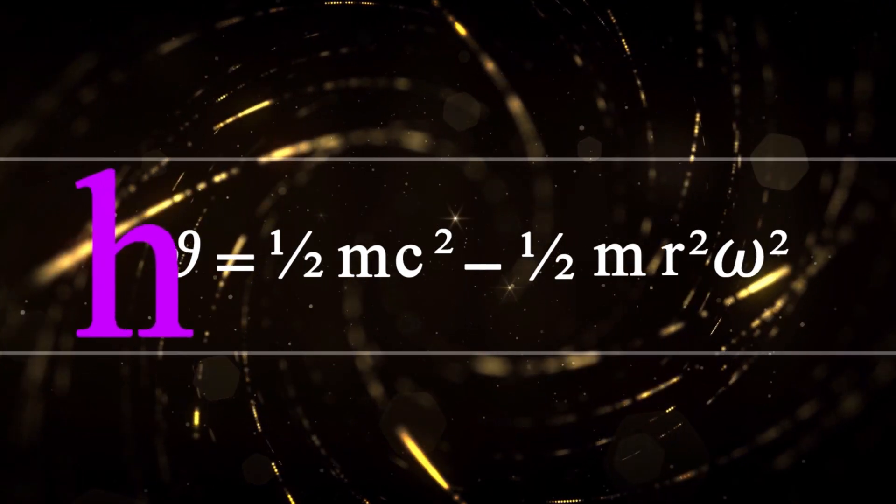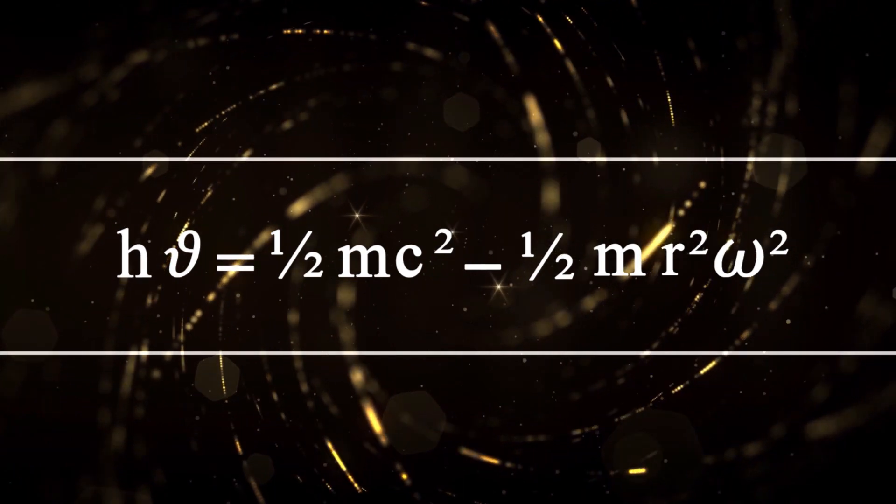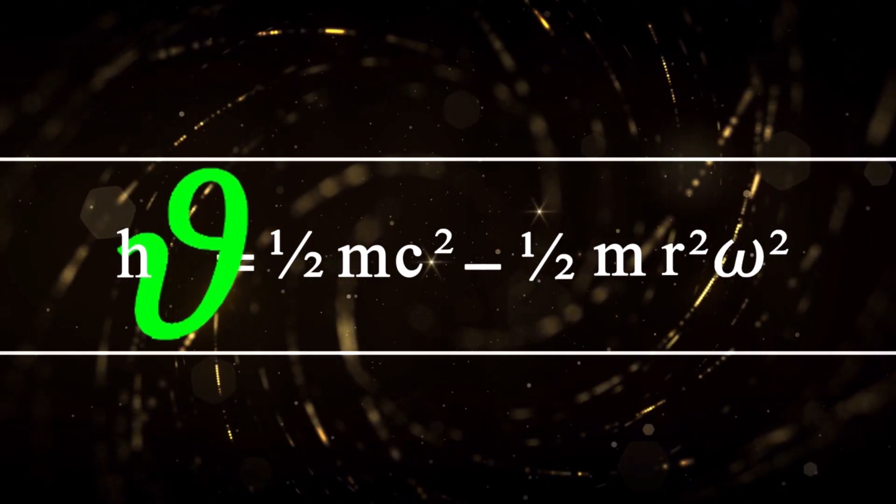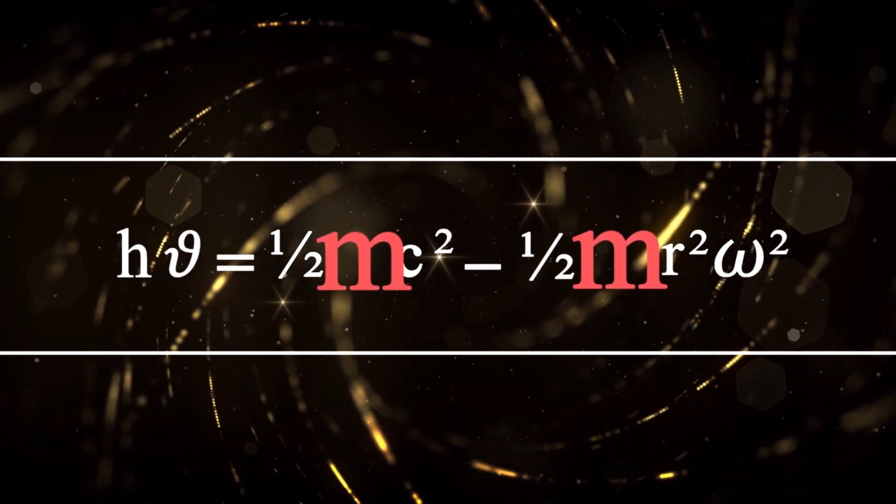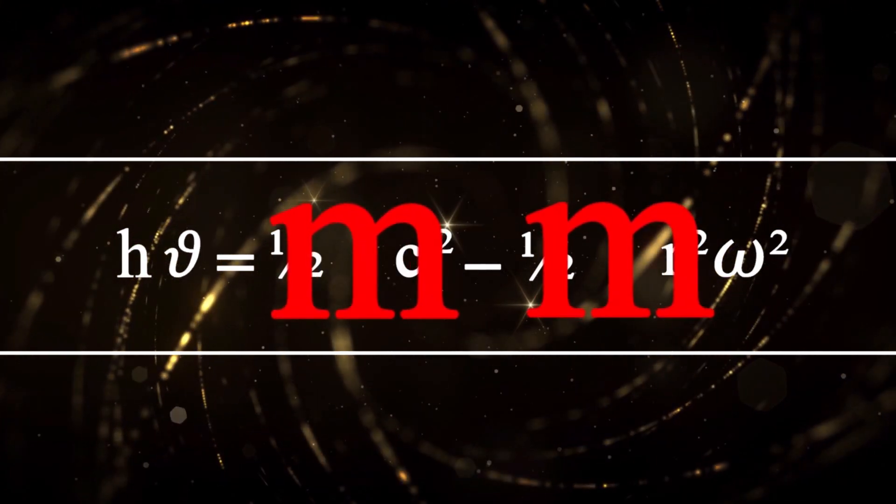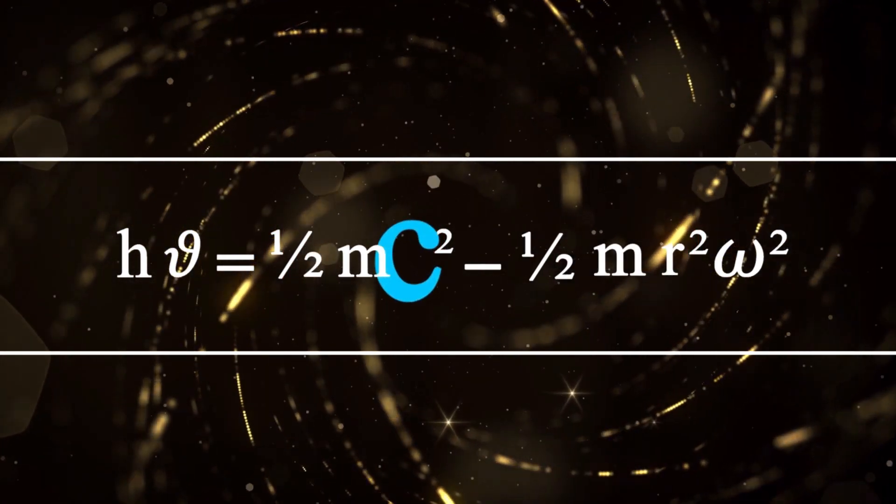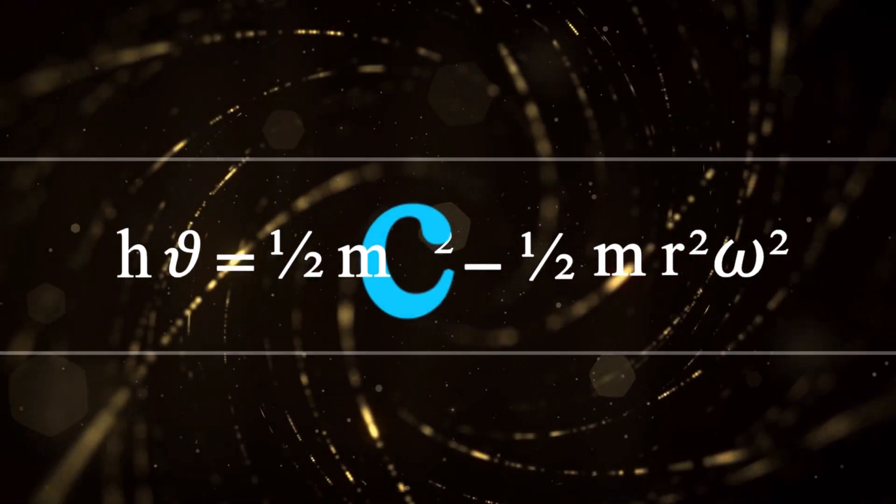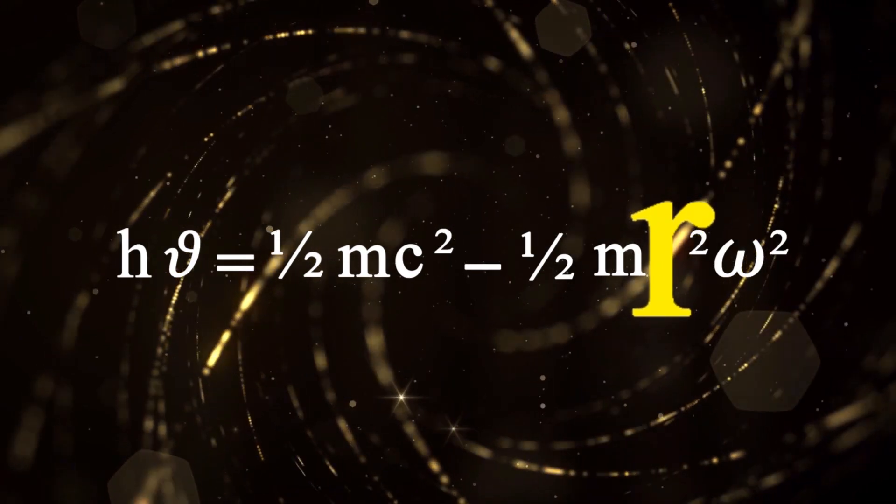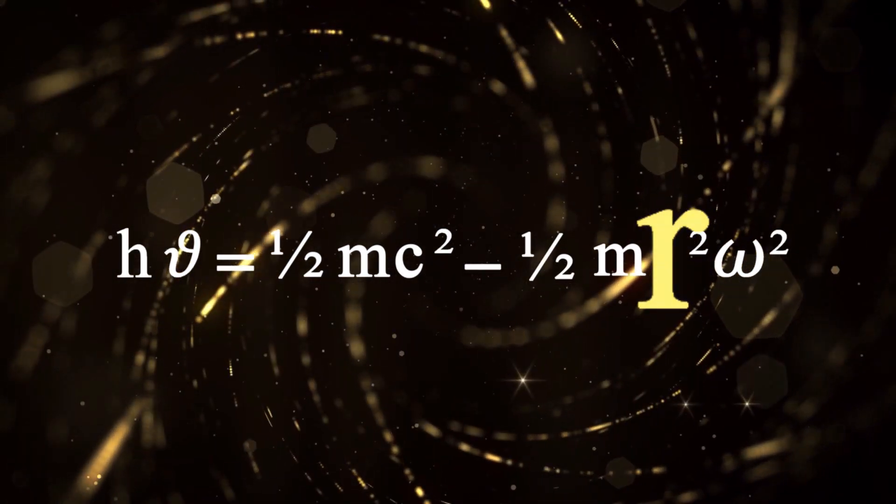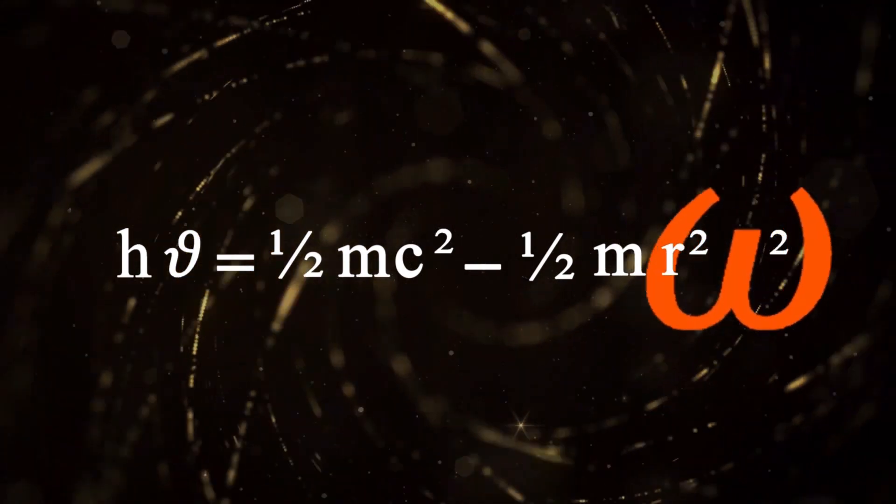H is the Planck constant, nu is frequency, m is the photon mass, c is linear speed of photon, r is gyro-radius, and omega is angular velocity.